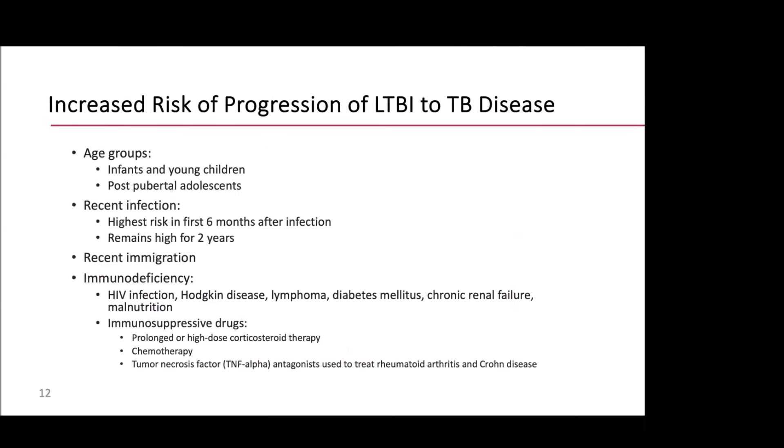Increased risk of progression is associated with age — infants and young children, but also post-pubertal adolescents. We don't understand very well why adolescents are at increased risk; we kind of hand-wave and call it hormones, but it's consistently been shown over decades of epidemiologic research. Recent infection within the last six months, but up to two years after infection, also confers a higher risk of progression. For that same reason, recent immigration also puts you at increased risk, presumably because they were infected shortly before coming here if they live in a high-burden country. Immunodeficiency — including HIV most classically, but also cancer, diabetes, chronic renal failure, malnutrition, and immunosuppressive medications including prolonged high-dose corticosteroids — also increases your risk.